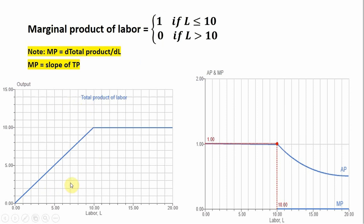Looking at the graphs: the total product of labor is a straight line with a slope of 1 up to 10 workers, and then it maxes out at 10 units of output. The slope of the first half is 1, and the slope of the horizontal section when L is greater than 10 is 0. For marginal product of labor: it equals 1 up to 10 workers — every time we hire one more worker, output goes up by 1. When we hire beyond 10 workers, marginal product is 0, so it falls to the L-axis and runs along it.